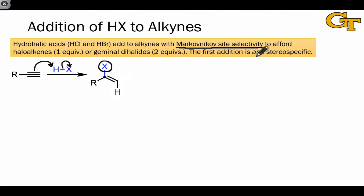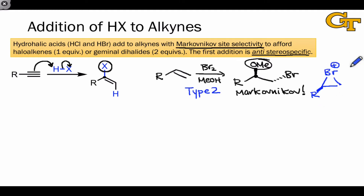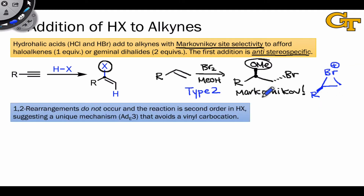Evidence against the vinyl carbocation intermediate is that the reaction is anti-stereospecific. Looking back at the cohalogenation example, which is also anti-stereospecific, the new carbon-oxygen bond and carbon-bromine bond are formed on opposite sides of the plane of the starting alkene. Cohalogenation involves a type-2 mechanism and the intermediacy of a halonium ion. The fact that this reaction avoids a carbocation intermediate and proceeds through a halonium ion intermediate suggests that hydrohalogenation of an alkyne also avoids a carbocation intermediate.